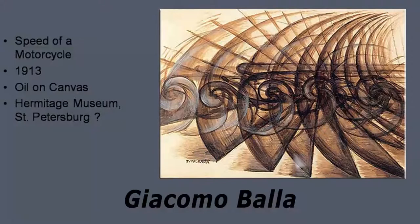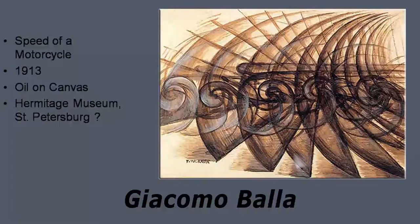Speed is something that cannot be seen easily. Now, look at the painting. In the painting too, there is not a trace of motorcycle or road or any person riding the motorcycle. What you see is a whole range of curving lines and curvatures, linear curvatures — almost like an echo of lines supposed to suggest the speed and movement of a motorcycle.